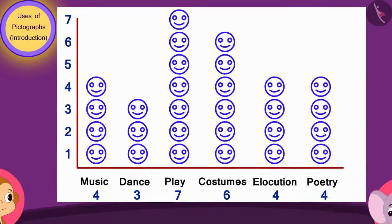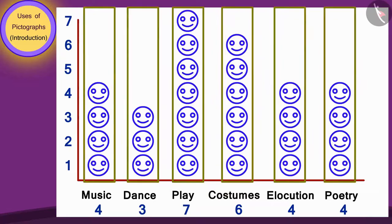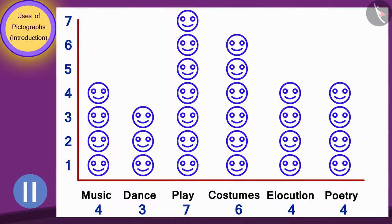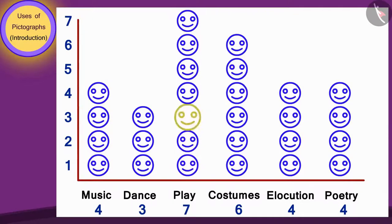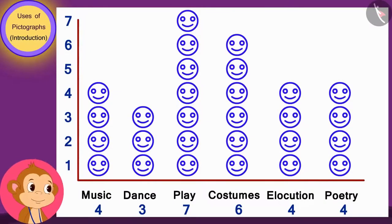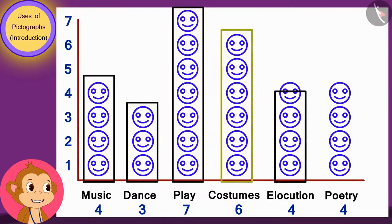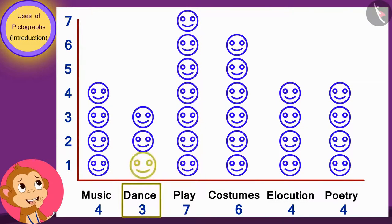Appu asked Babban how many faces should be made above the dance program. Babban looked at the table and said three faces. Appu said, well done — you understood! Now, which program has the most children participating? The tallest line is of seven faces above the play program, meaning the maximum number of children participated in the play. Babban got very excited, saying just by seeing the height of the lines he could find out which program had the most and least children.